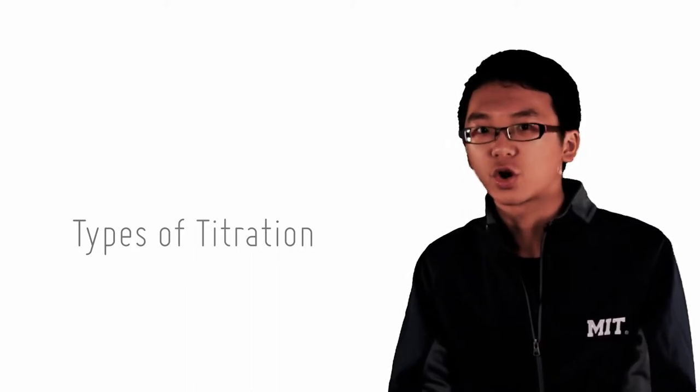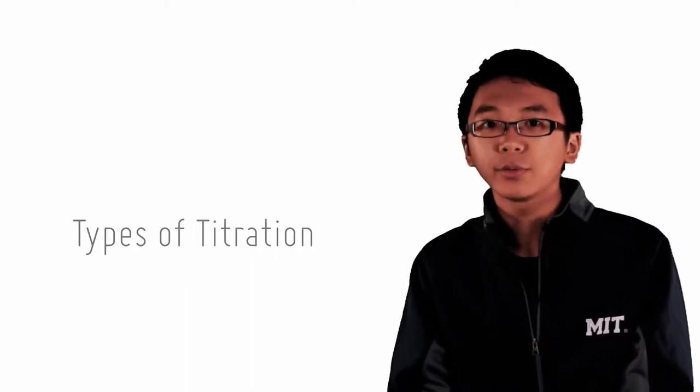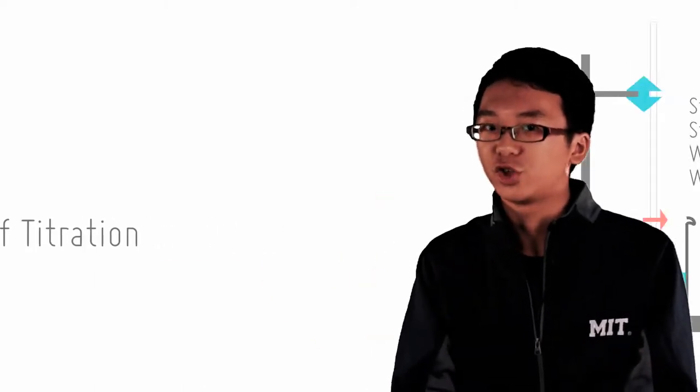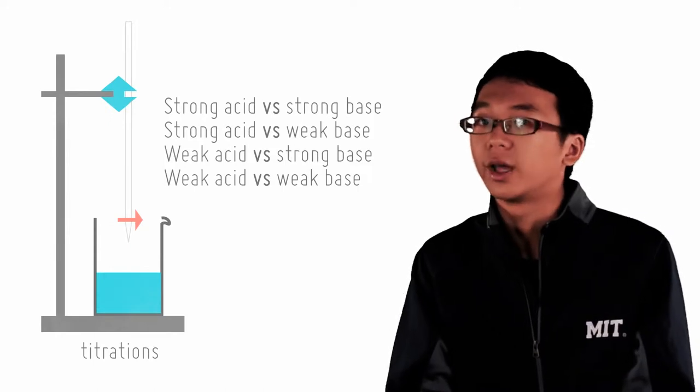Previously, we did the titration of a strong acid and strong base. Now we'll look at other types of titration. There are in general four types of titration because there are two kinds of acids and two kinds of bases: strong and weak.